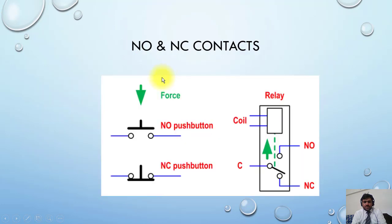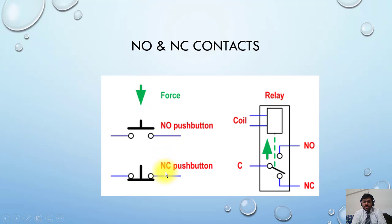Here is another example — this relay is not picked up, so this is the normal position of the relay. In de-energized normal position, the normally open contact will be open, and the normally closed contact will be closed. Once this coil is energized through some supply, the contacts will change — NC becomes NO, and NO becomes NC. So the normally open contact will become open and the normally closed contact will become short.